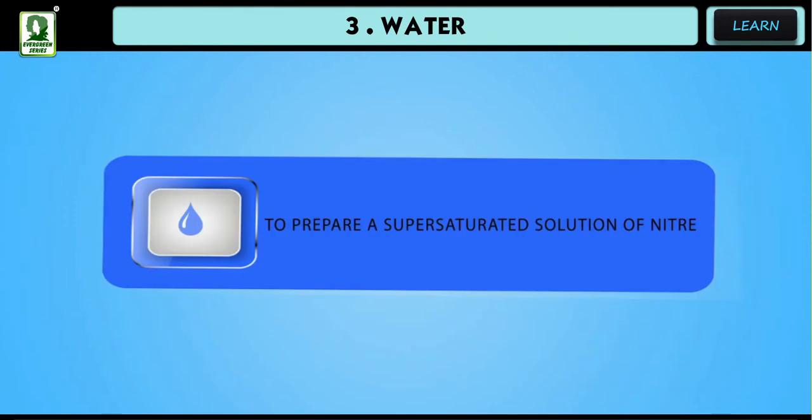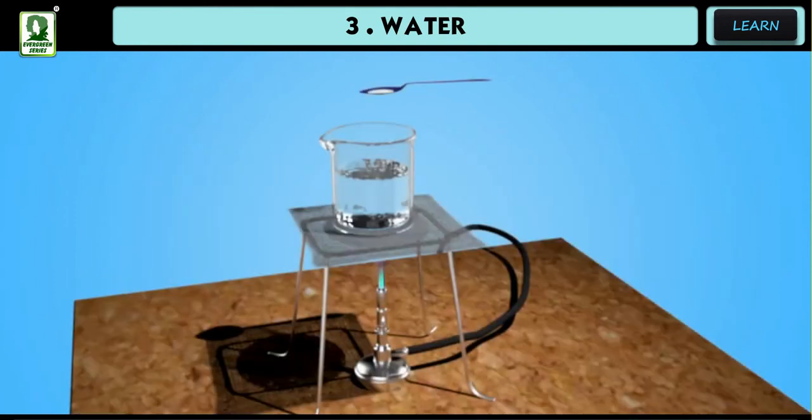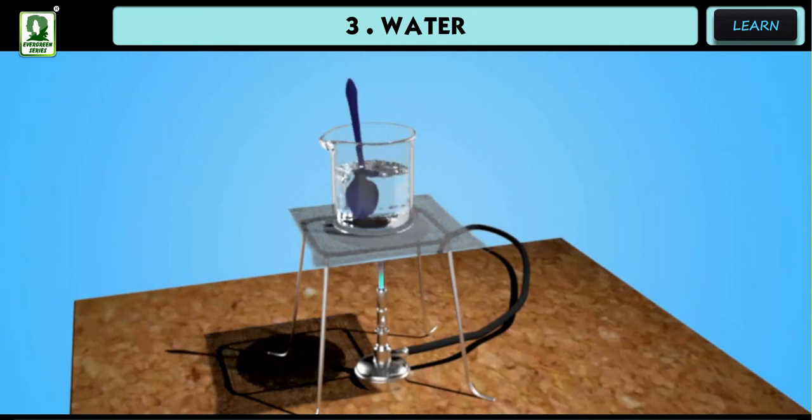To prepare a supersaturated solution of nitre, take 100 grams of distilled water. Heat it to increase its temperature. Now keep on dissolving nitre until no more nitre dissolves. This solution contains more amount of nitre than the saturated solution.